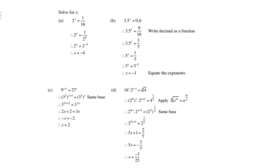Let's look at the first example. Solve for x, 2 to the power x equals to 1 over 16. So we use prime numbers here. 16 is 2 to the power 4, which is the same as 2 to the power negative 4. Therefore, x equals to negative 4.